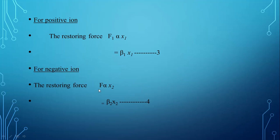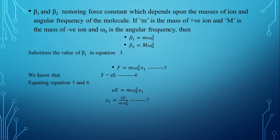For the negative ion, similarly, the restoring force F2 is proportional to x2, so the proportionality is removed by the constant beta 2 times x2. Name it as equation number 4. Here, beta 1 and beta 2 are the restoring force constants, which depend upon the masses of the ions and the angular frequency of the molecule. If small m is the mass of the positive ion, capital M is the mass of the negative ion, and omega 0 is the angular frequency, then beta 1 equals m omega 0 squared and beta 2 equals M omega 0 squared. Substituting beta 1 into equation 3, we get F equal to m omega 0 squared x1. Name it as equation number 5.